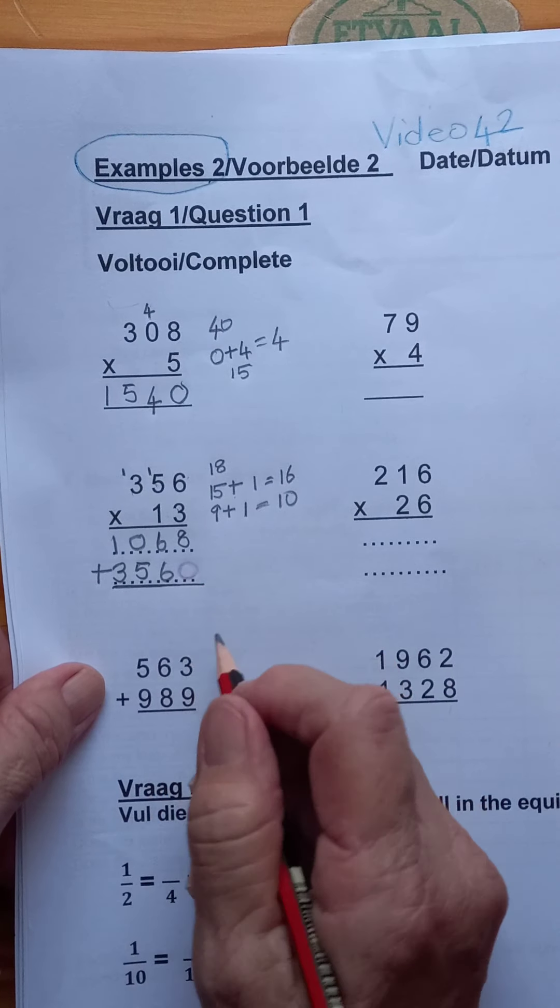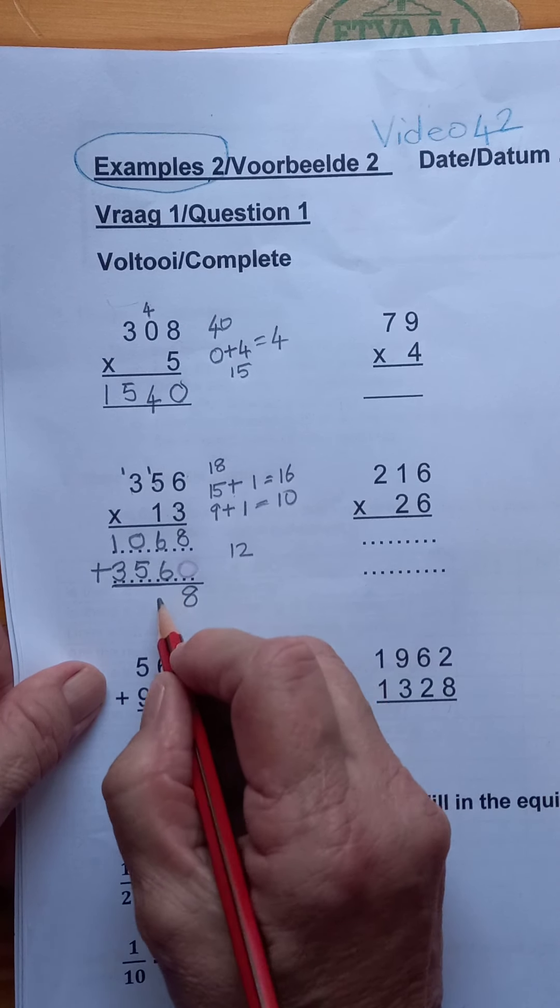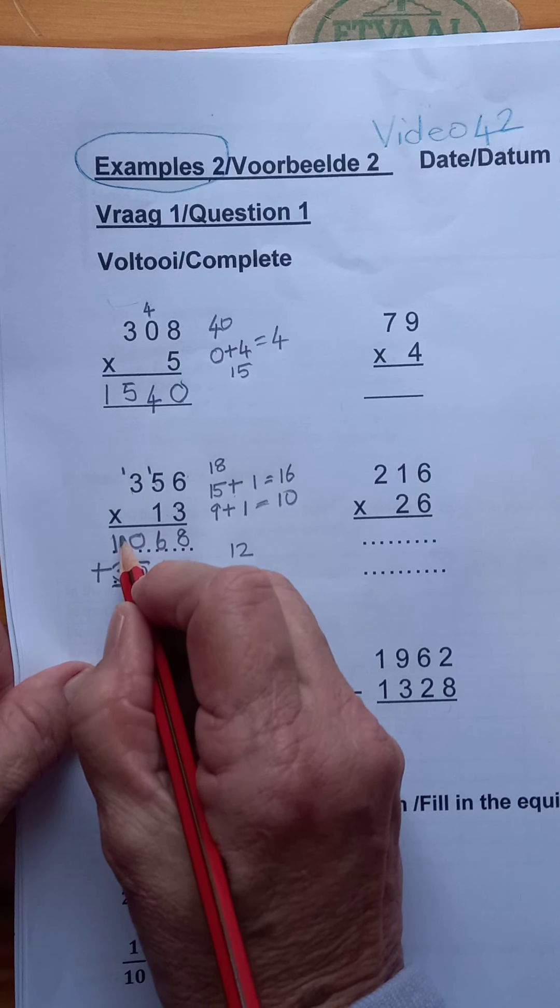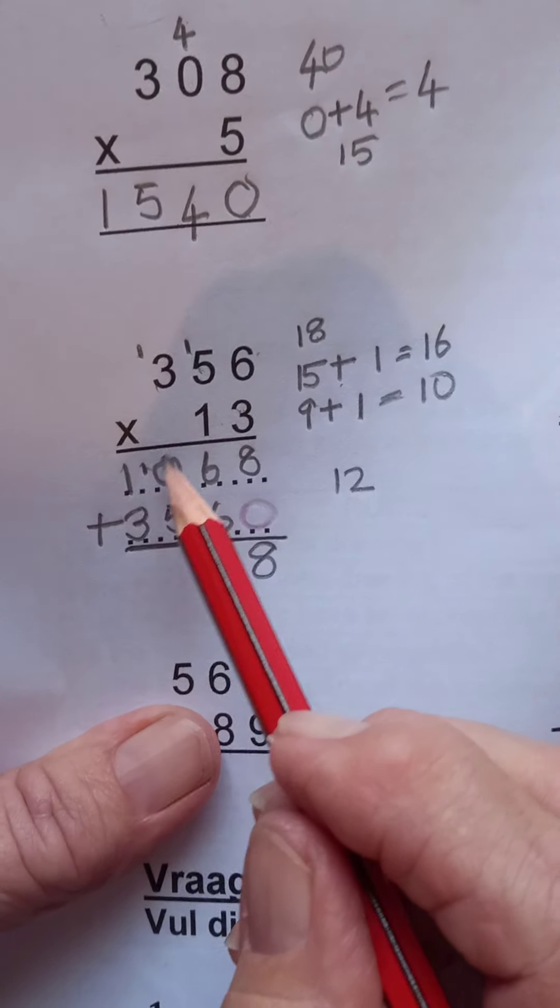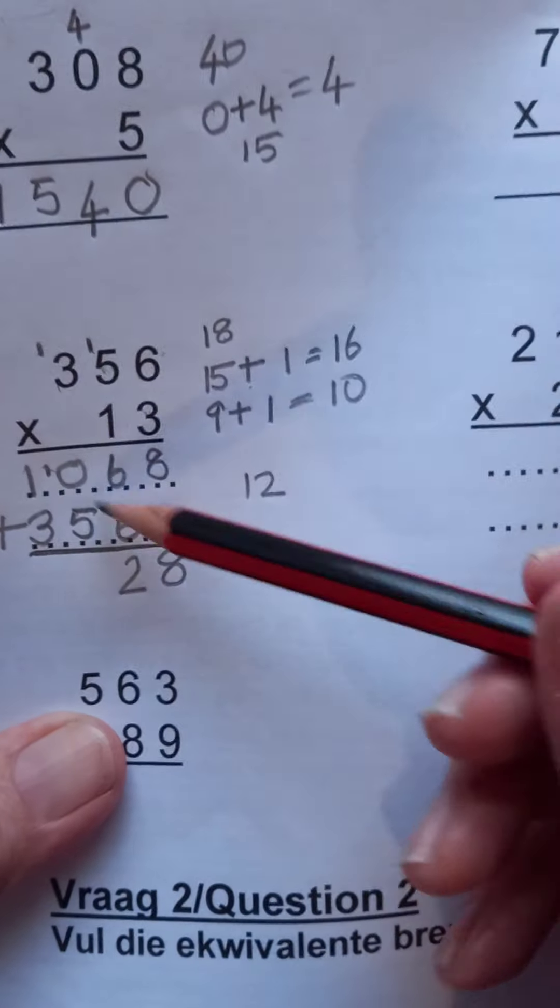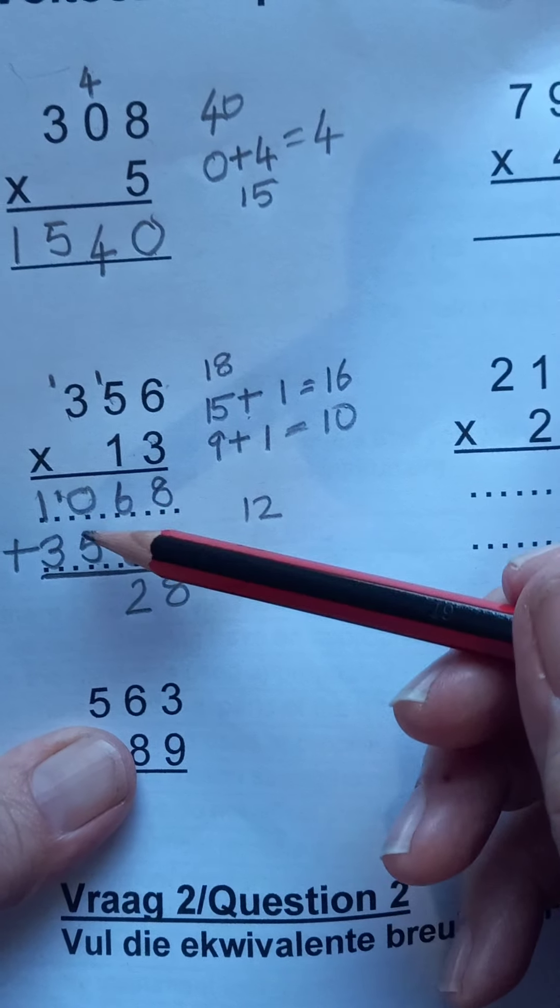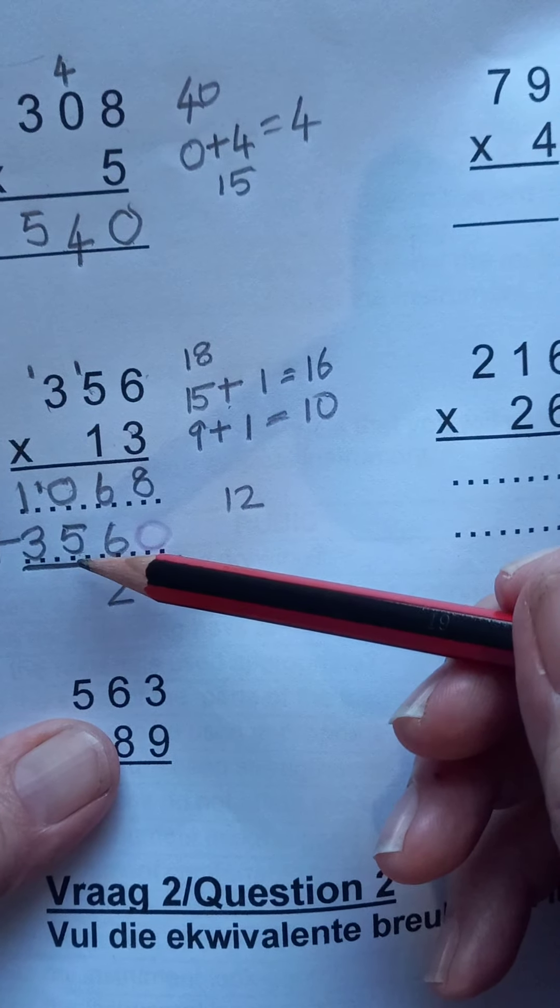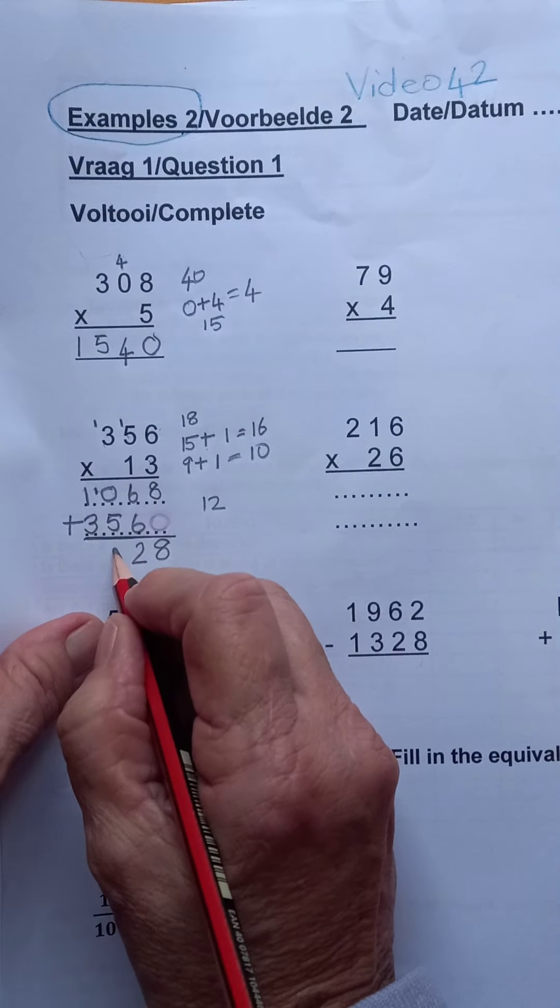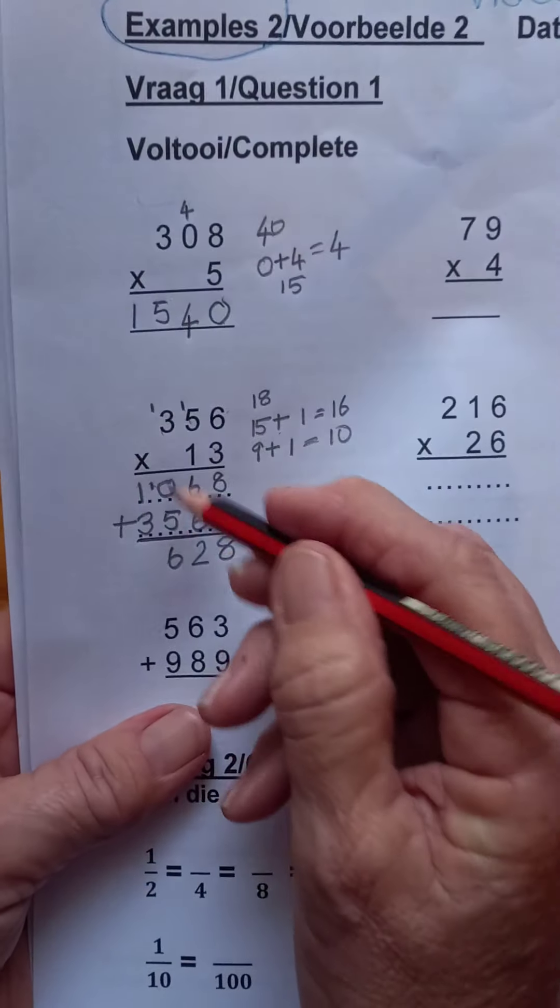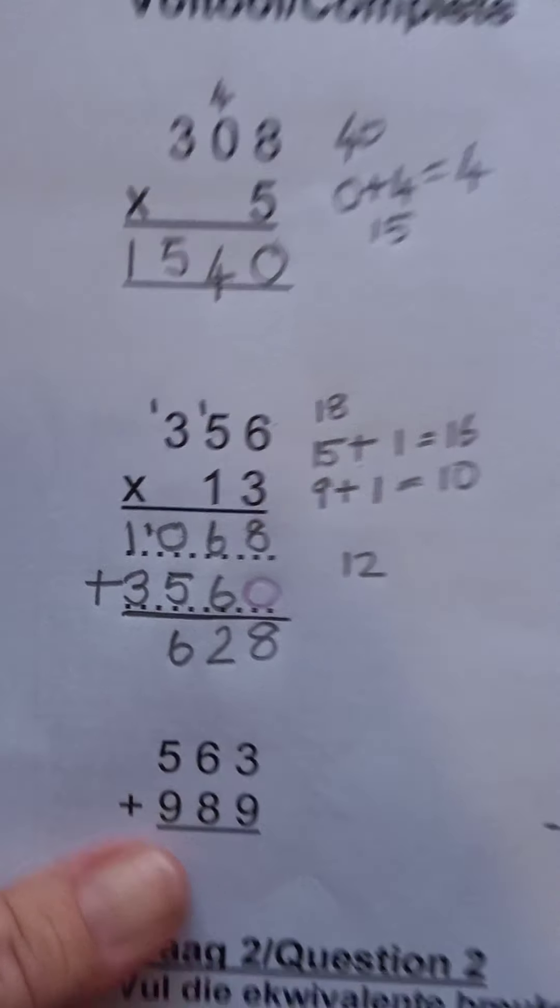Add those two numbers, 8 plus 0 is 8. 6 plus 6 is 12. 1 plus 1, because 0 plus 5 is 5 but there's a 1 now. One hundred plus five hundredths is six hundredths. One plus five is six, one plus three is four.